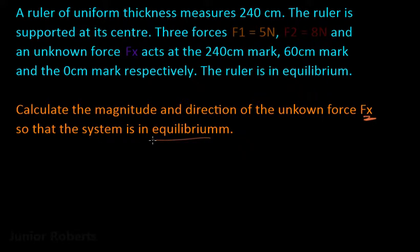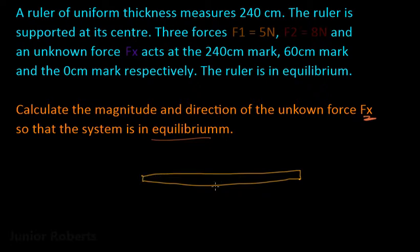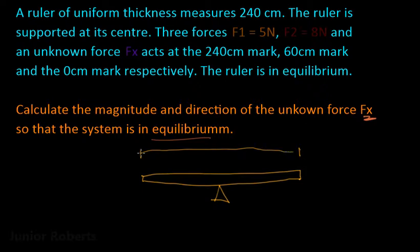To solve this question, the first thing we want to do is make a simple sketch of what's going on. So here is our ruler, supported at its midpoint. The length of this ruler from end to end is 240 centimeters. Converting to meters, we divide by 100 to get 2.4 meters.